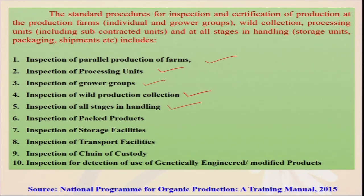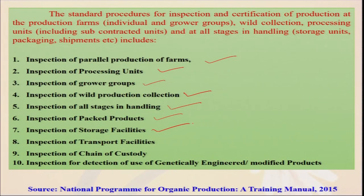Inspection of packed products: when packing for the international market, many materials are prohibited in organic farming — no artificial flavors or artificial agents of any kind. Storage facility inspection checks whether there is any chance of contamination with inorganic products, including whether insecticides are used in godowns. Transport facility inspection checks whether organic and inorganic products are transported in the same container and whether there is enough physical separation. Inspection for detection of genetically engineered/modified organisms (GMOs) is also included — GMO crops like Bt (Bacillus thuringiensis) engineered plants are not allowed in organic farming.